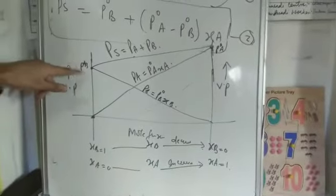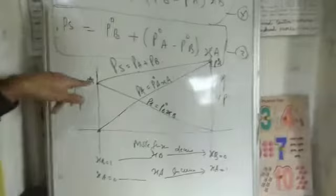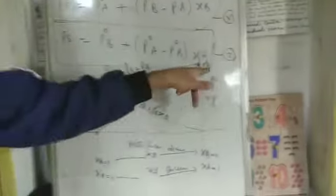Why am I taking P0B lower than P0A? Because component A is more volatile as compared to B, that is why its vapor pressure will be higher than B's vapor pressure.